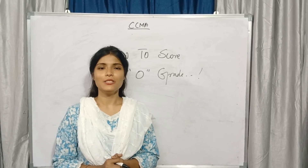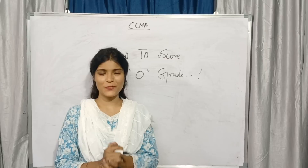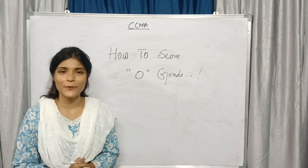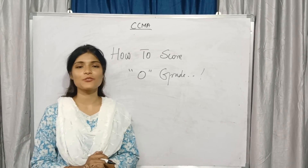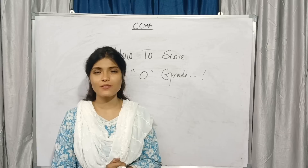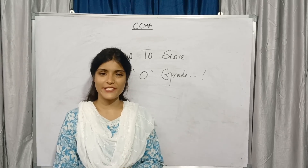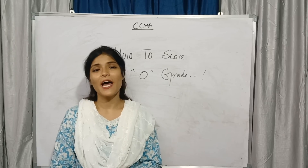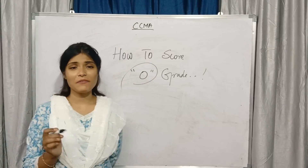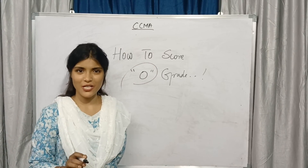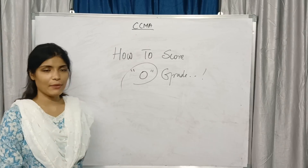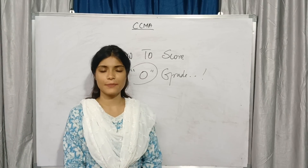Hello and welcome back to our channel. Students, in this video, as some of you have personally requested, I will cover how you need to score O grade in your CCMA subject — that is semester 6 Cost Control Management Accounting. So in this video I will give you tips and tricks for your preparation. Just follow these tips and tricks and definitely you are able to score O grade — you have a 99.9% chance. Watch this video till the end and it will be beneficial to you.